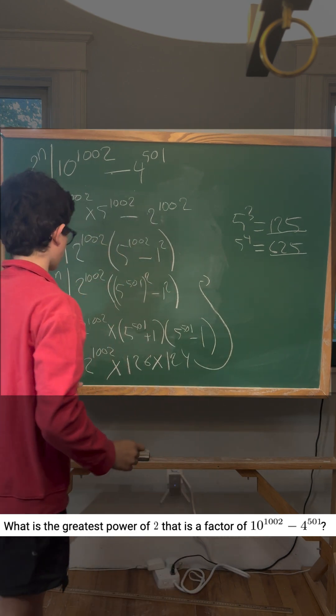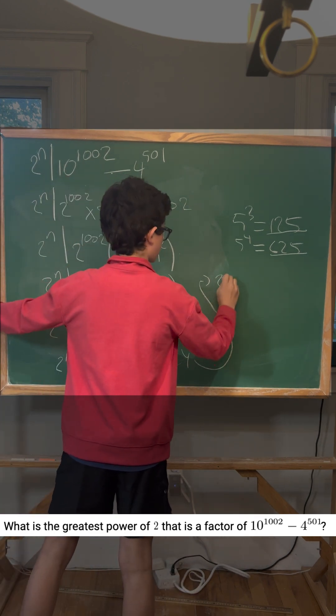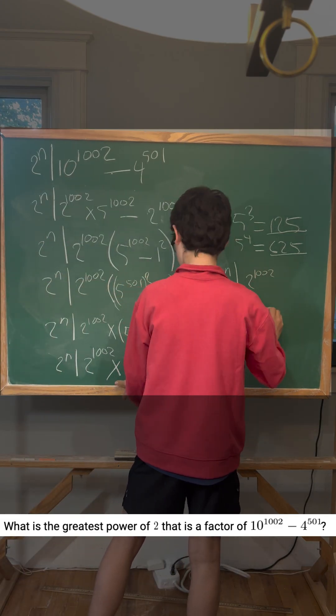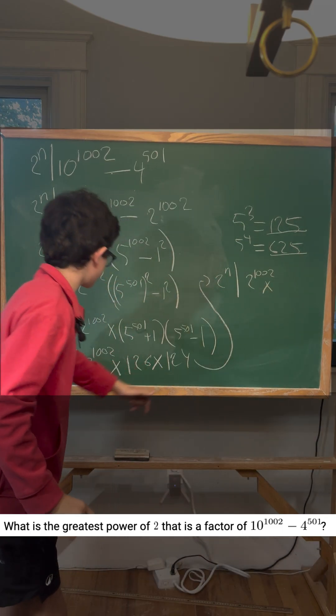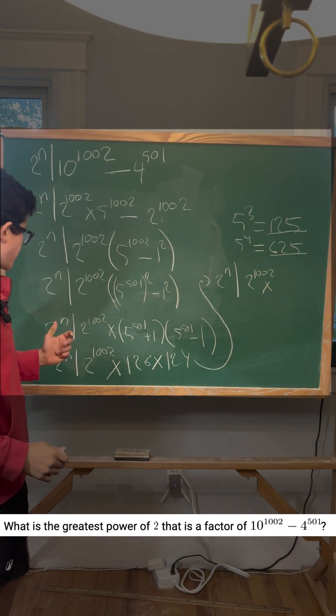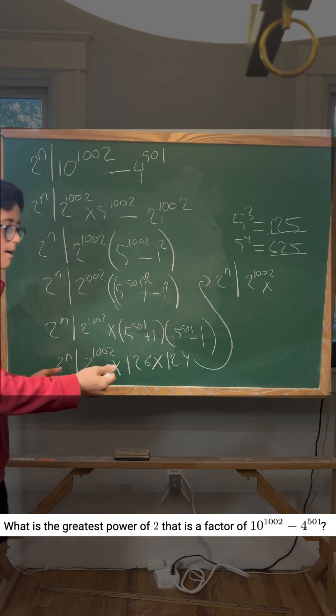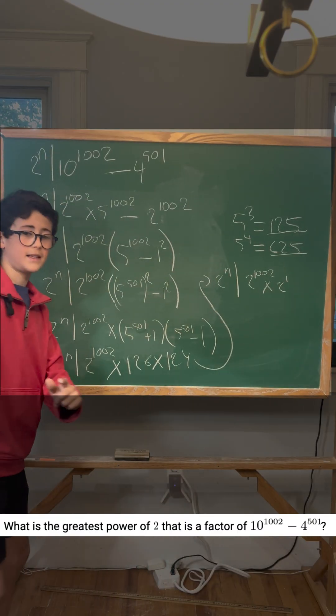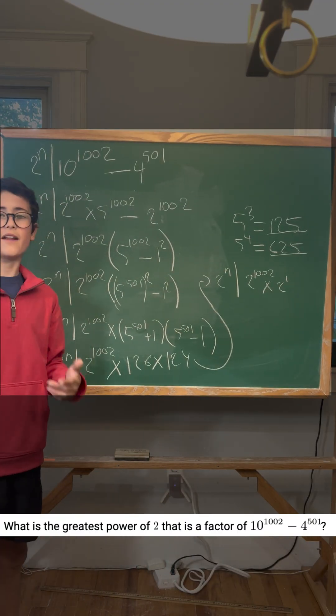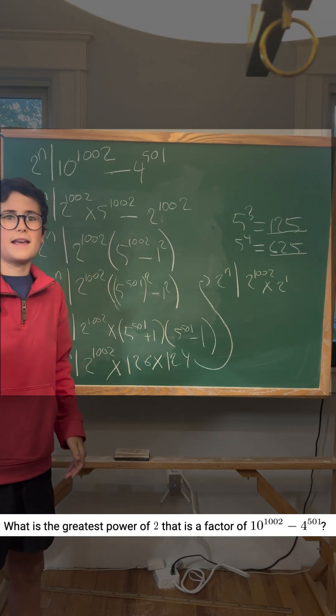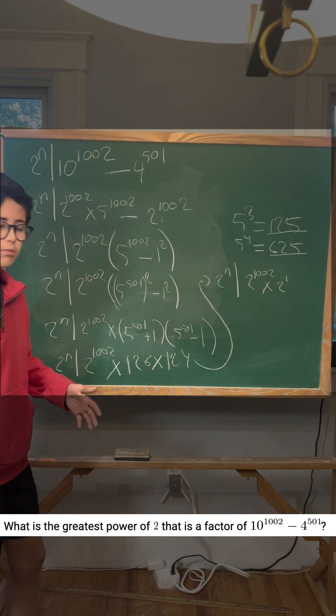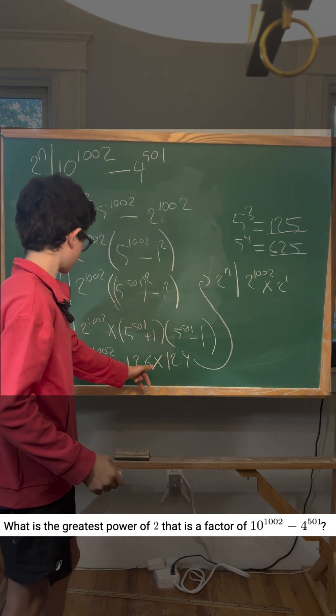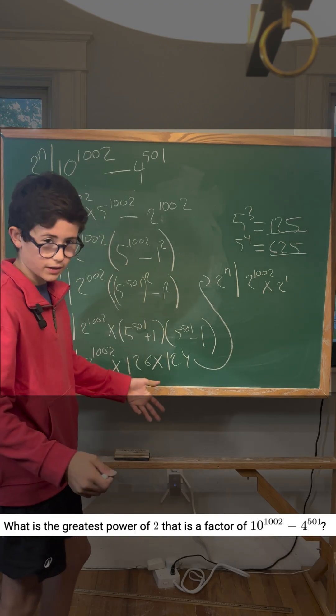We could also write 2^n divides 2^1002 times, so 126 is divisible by 2, so we could just write 2^1. But it's not divisible by 4. And if it's not divisible by 4, it won't be divisible by 8, 32, or any of those multiples. So we could just write it as 2^1, which would be its power of 2 that we could fit in it.